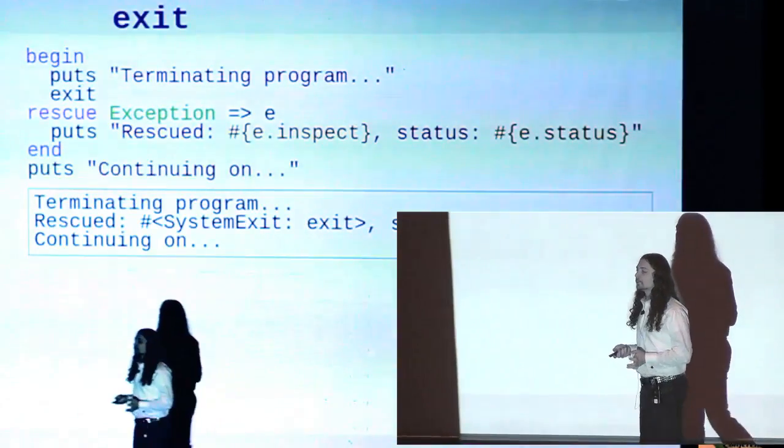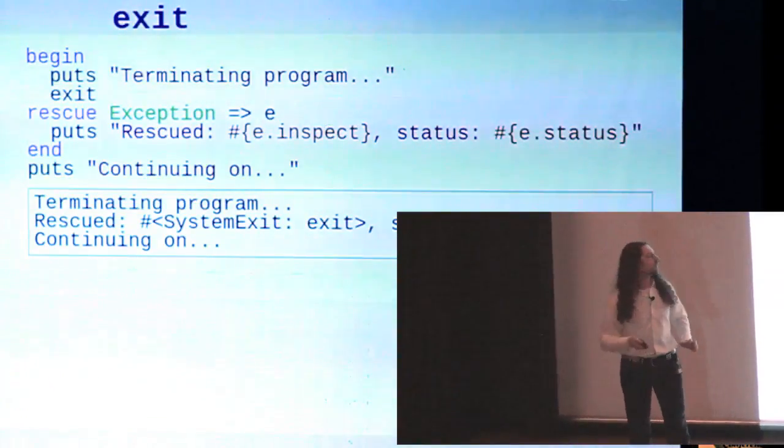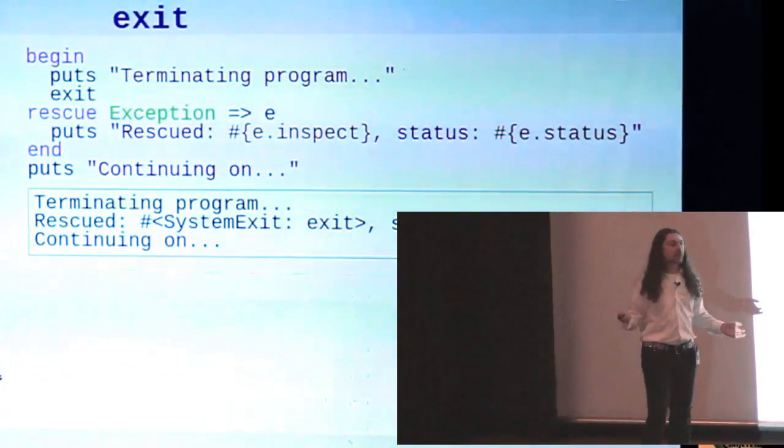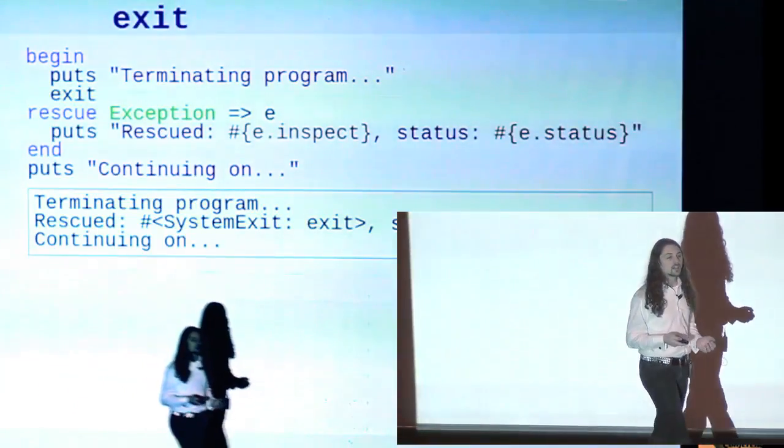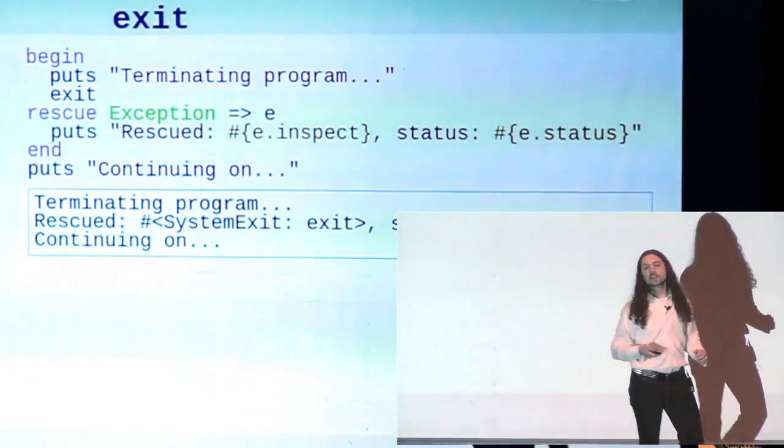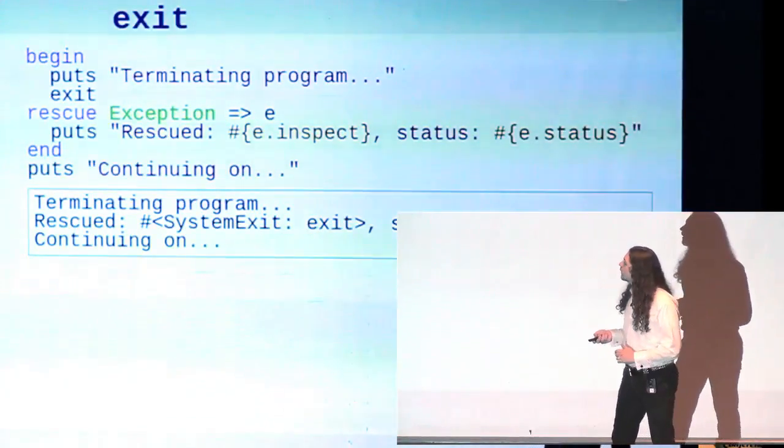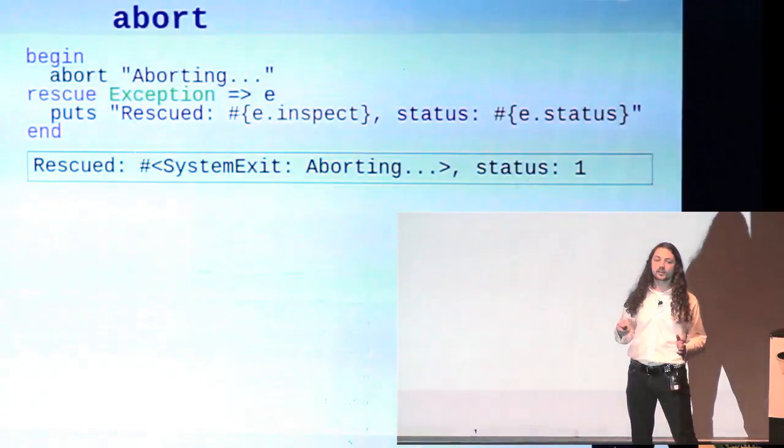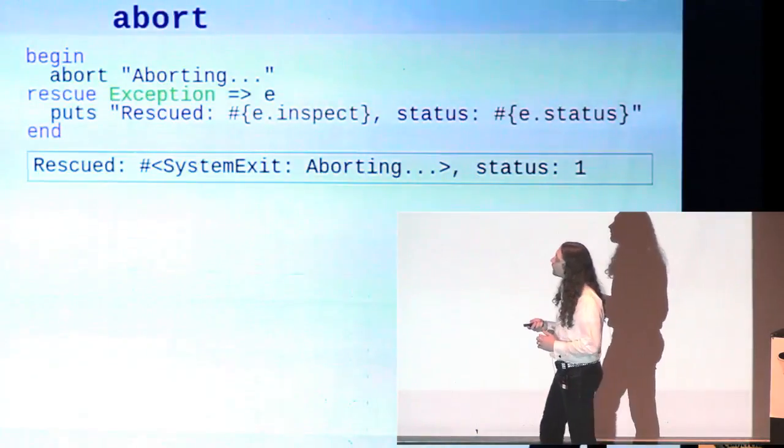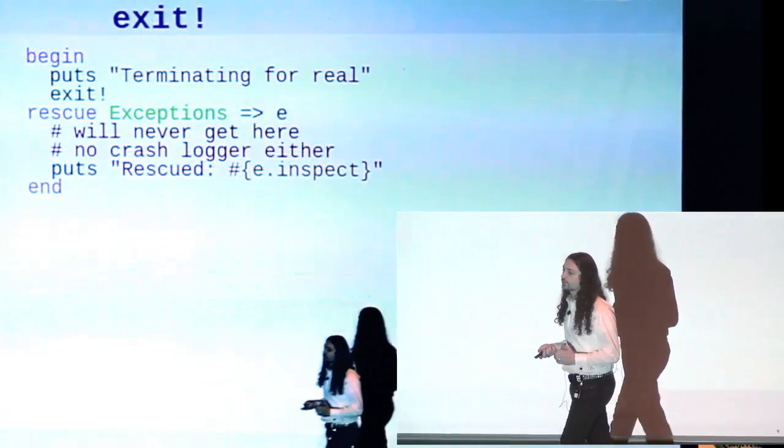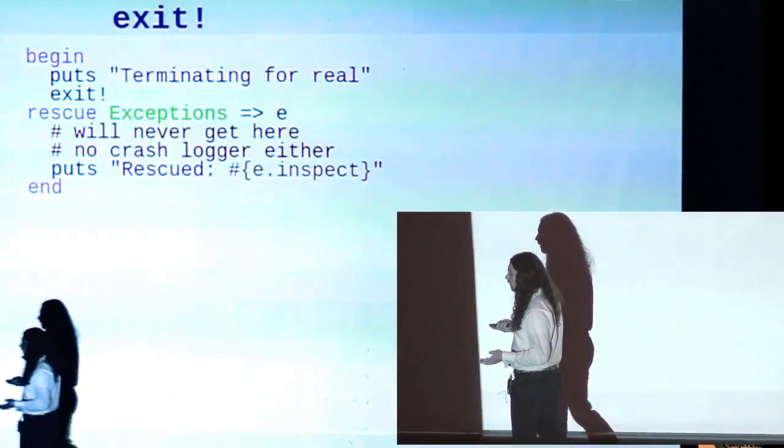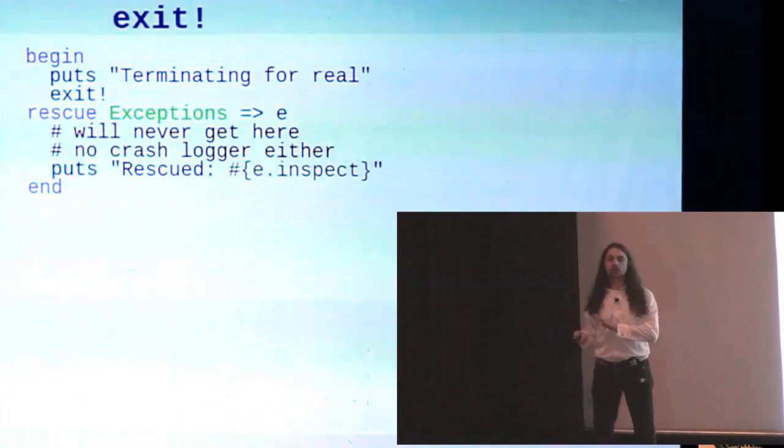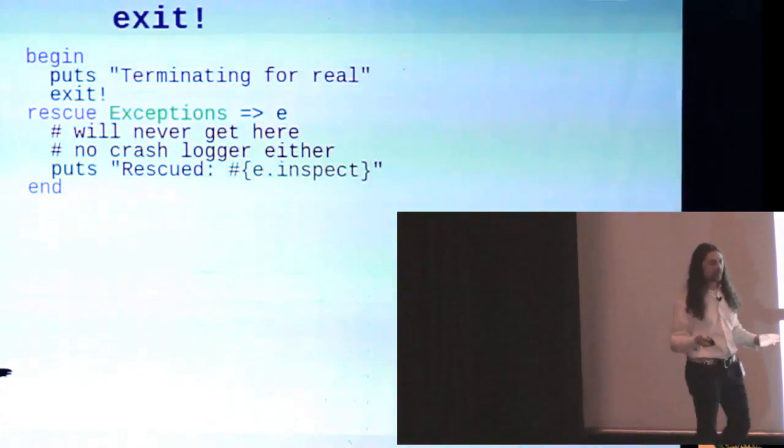When you call exit in Ruby, what you're really doing is raising an exception, which you can see in this piece of code here. We say exit, and then we rescue any exception, and we ignore it, and the program continues blithely along, despite the fact that we told it to exit. So you can force programs not to exit this way. Abort is the same way. Abort just sets up the system exit exception to have an error status instead of a success status. But other than that, it's still raising system exit.